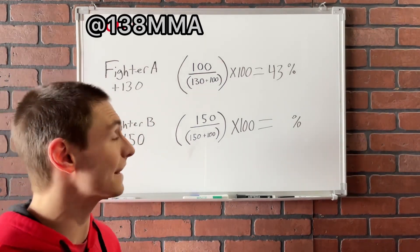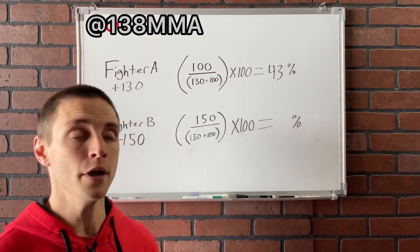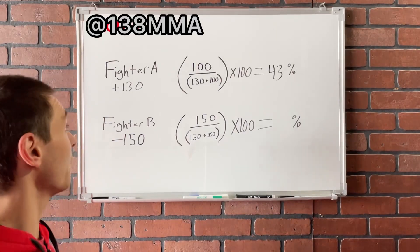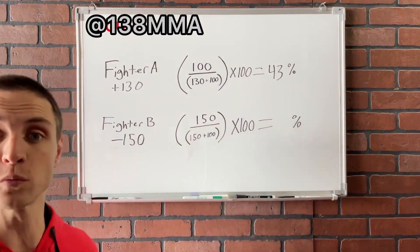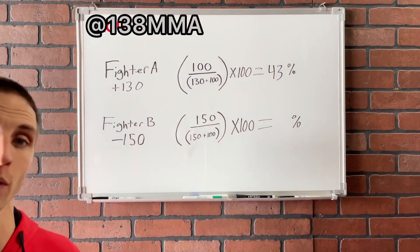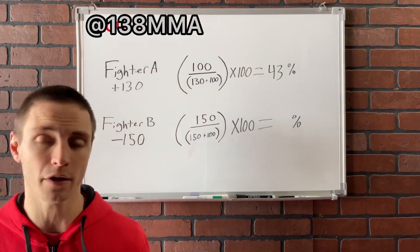So what we're going to do here, we're going to break down the implied probability of two hypothetical fighters. Hypothetical fighter A is going to be a plus 130 underdog and hypothetical fighter B is going to be a minus 150 favorite. Now these are the American odds.